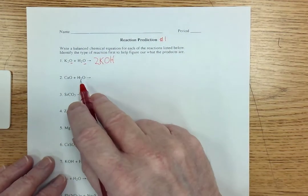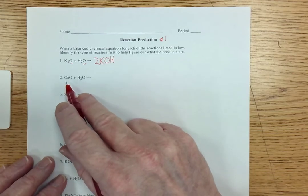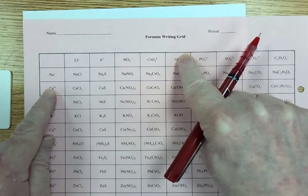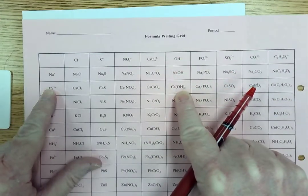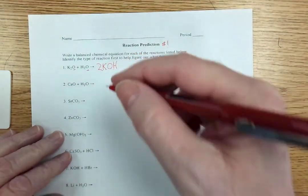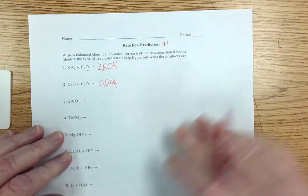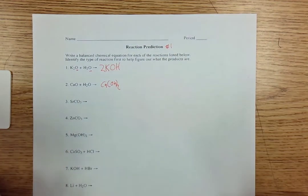Now the second one basically looks the same except it's calcium oxide. So I come back to my formula writing grid. There's calcium. Come over to hydroxide. I get calcium hydroxide, CaOH sub 2. Pretty straightforward there.